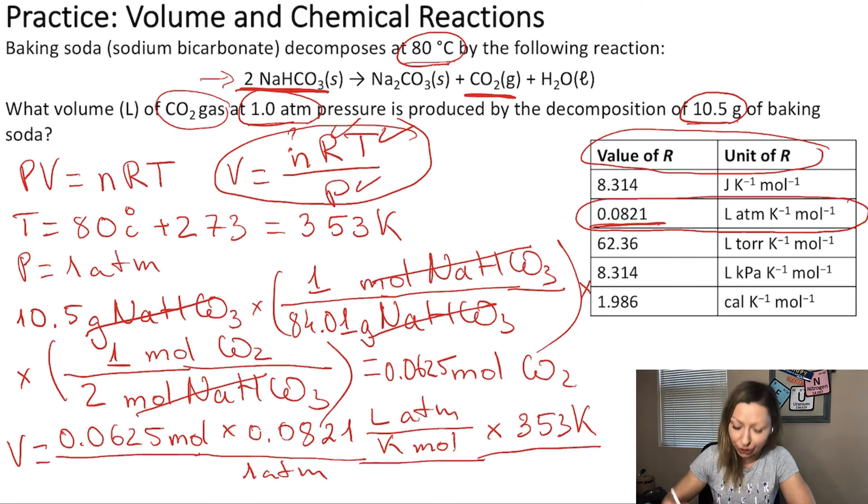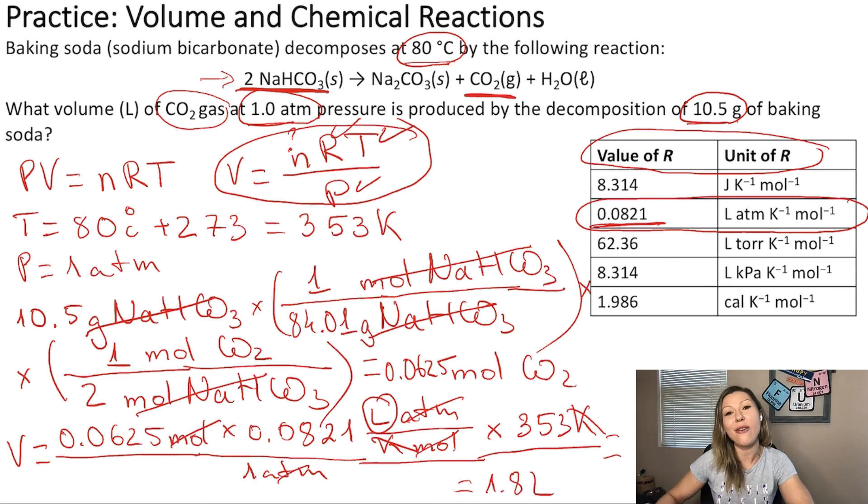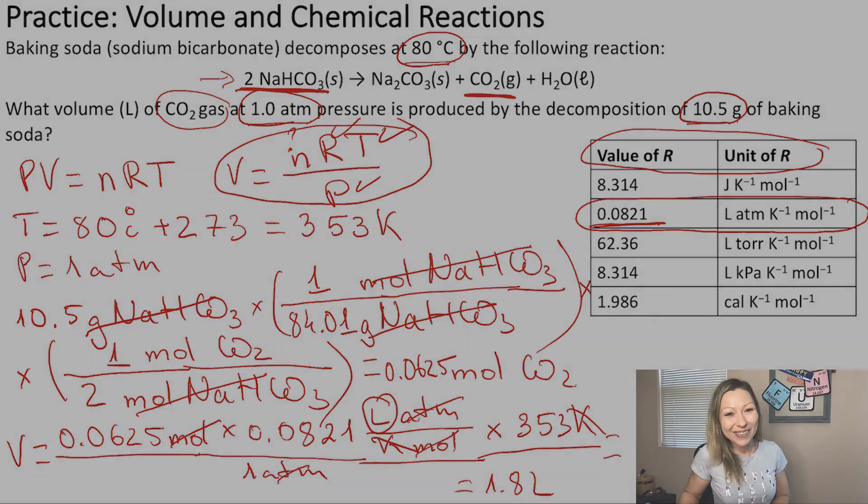Okay, let's double check the units. The Kelvins will cancel out. The ATMs will cancel out. The moles will cancel out. Our final unit is actually liters. Excellent. So, if we do this calculation, we are going to get 1.8 liters of carbon dioxide gas. Okay. I hope this makes sense. See you in the next video.